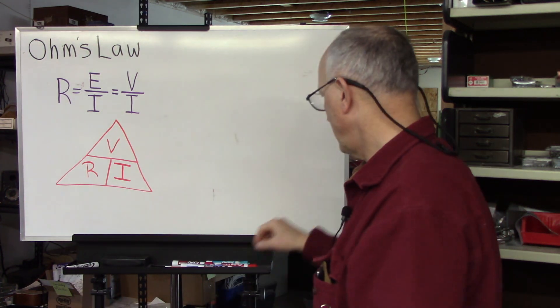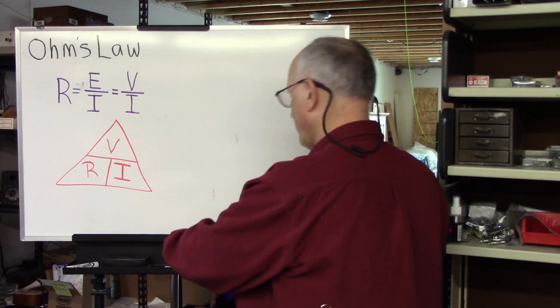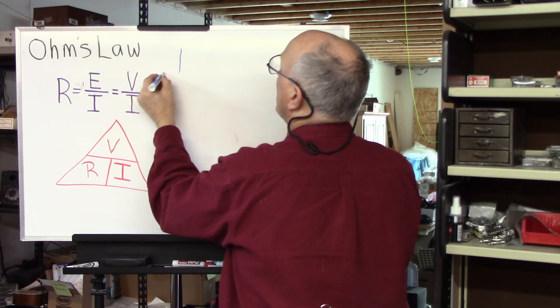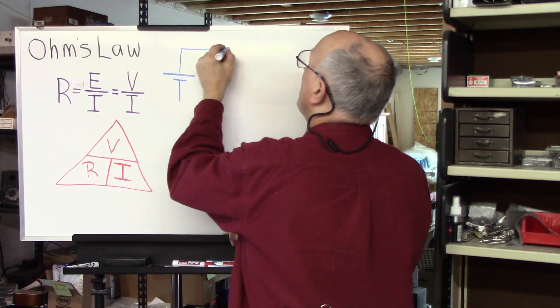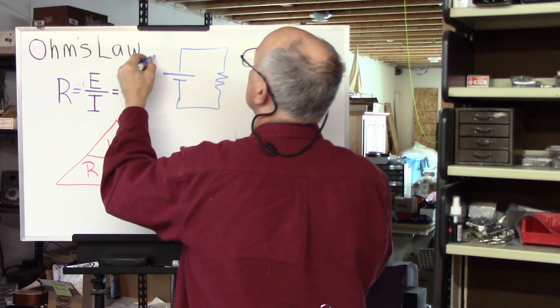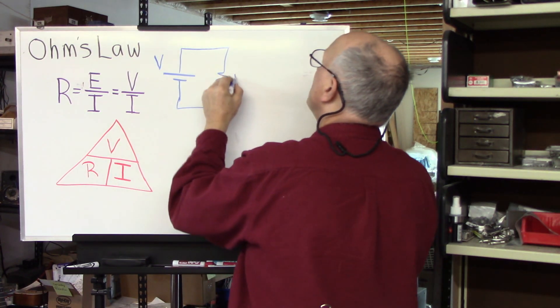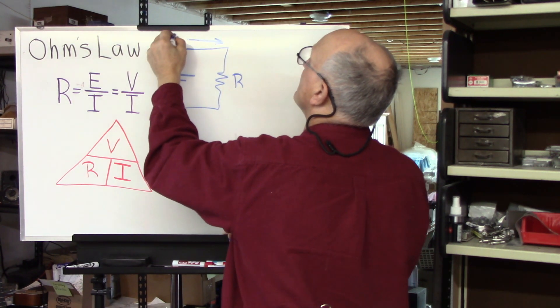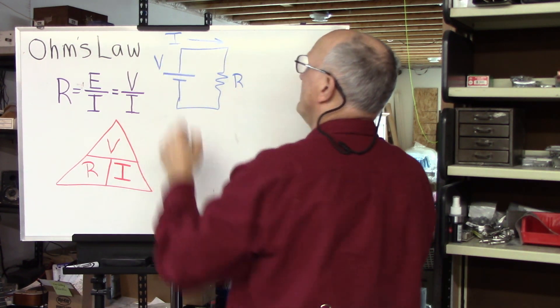Let's do a couple of practice problems here. Here is our circuit. We have a battery, and we have a resistor. Very simple battery and resistor. This has a certain voltage. This has a certain resistance. And flowing through here is a certain amperage.